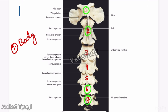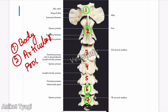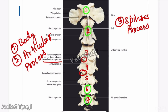The articular process of the typical cervical vertebrae is well developed and present in the form of a plate. The spinous process is inclined forward, and it is short and tubercular.